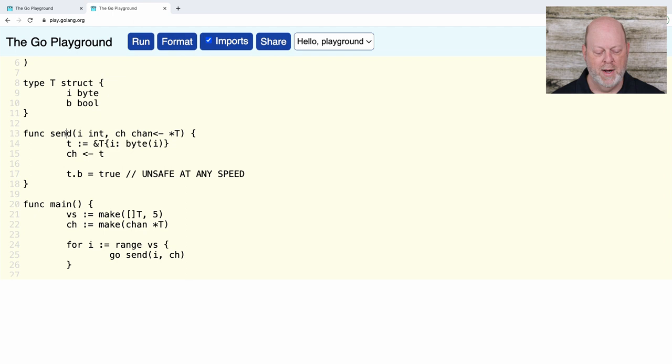So, I've made this structure deliberately small. And we're going to have a send function. My send function is going to take a channel. It's going to create an object of type T, take its pointer, and put the pointer into the channel. So, I'm not sending along the value. I'm sending along the address of a value that I'm responsible for. And after I send it, I'm going to modify it.